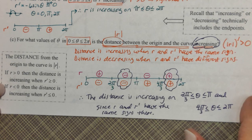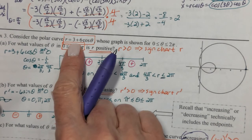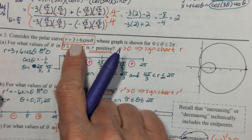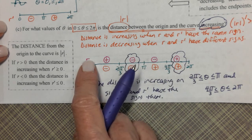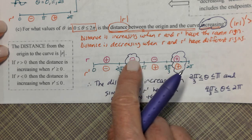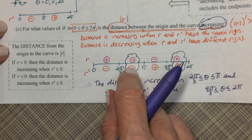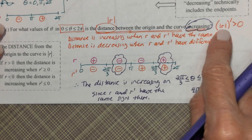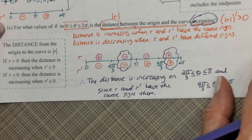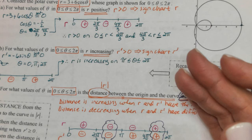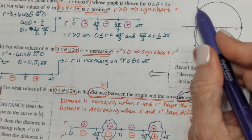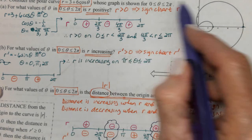A lot of times in problems, the function r is always positive on the given interval. If r is always positive, then the distance equals r itself, so you can simply use r′ positive to find when the distance is increasing. It is important to understand the meaning of these results and be able to look at the graph and tell what's going on on the interval you're considering.